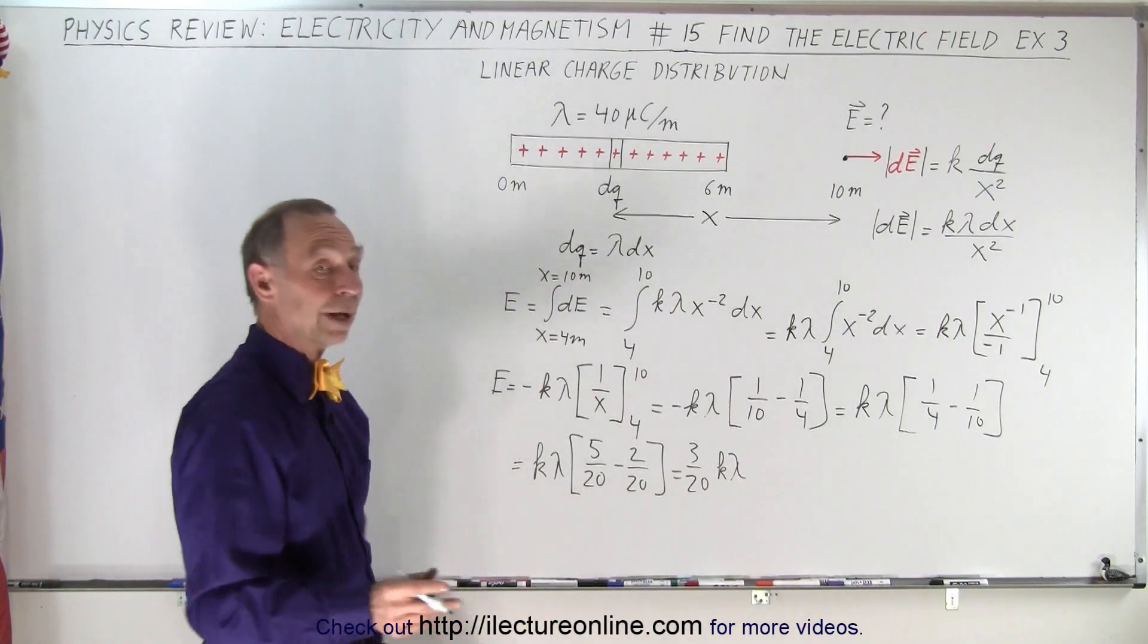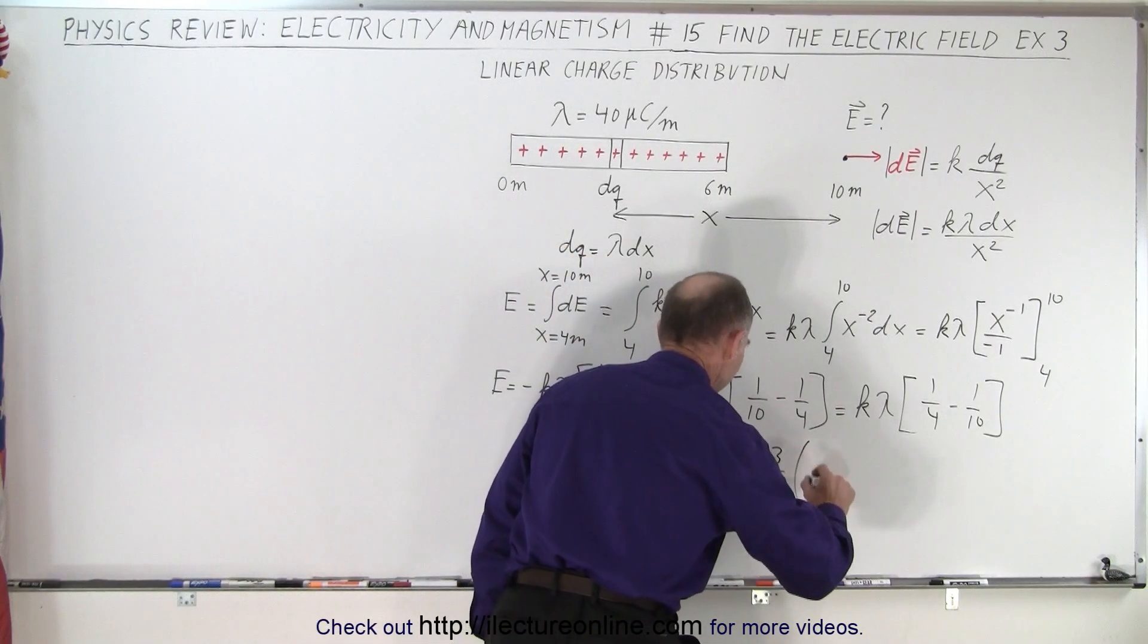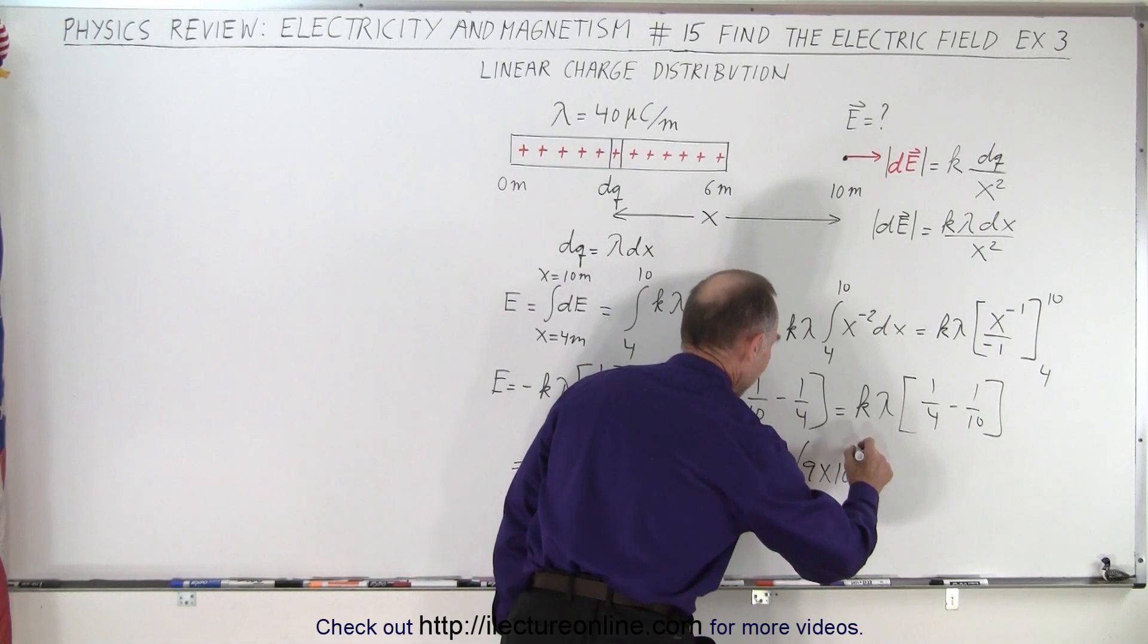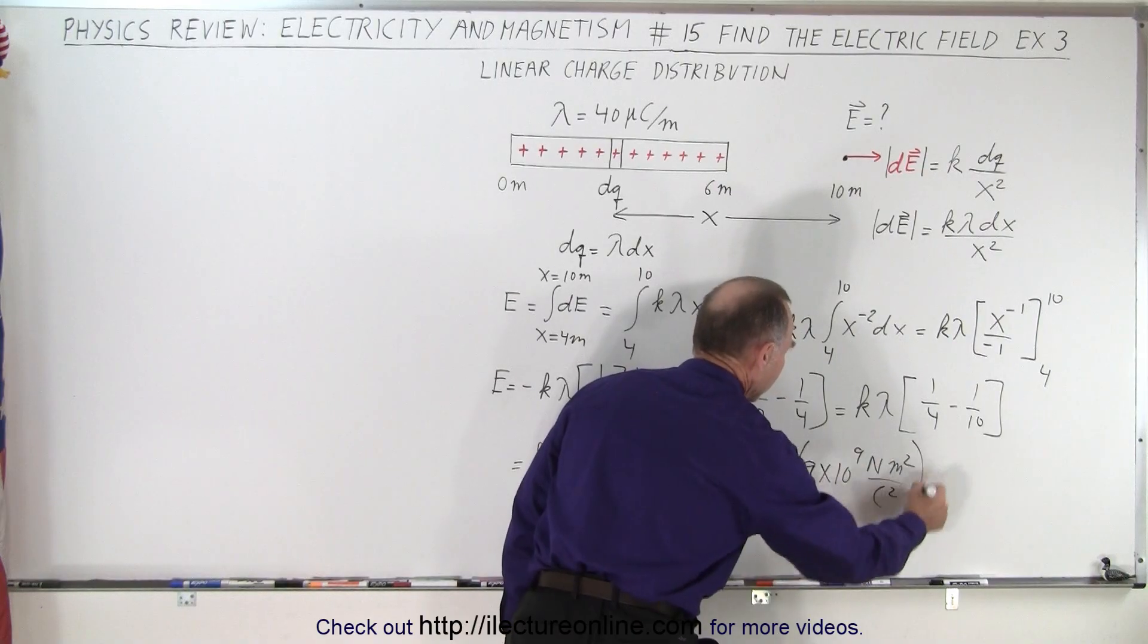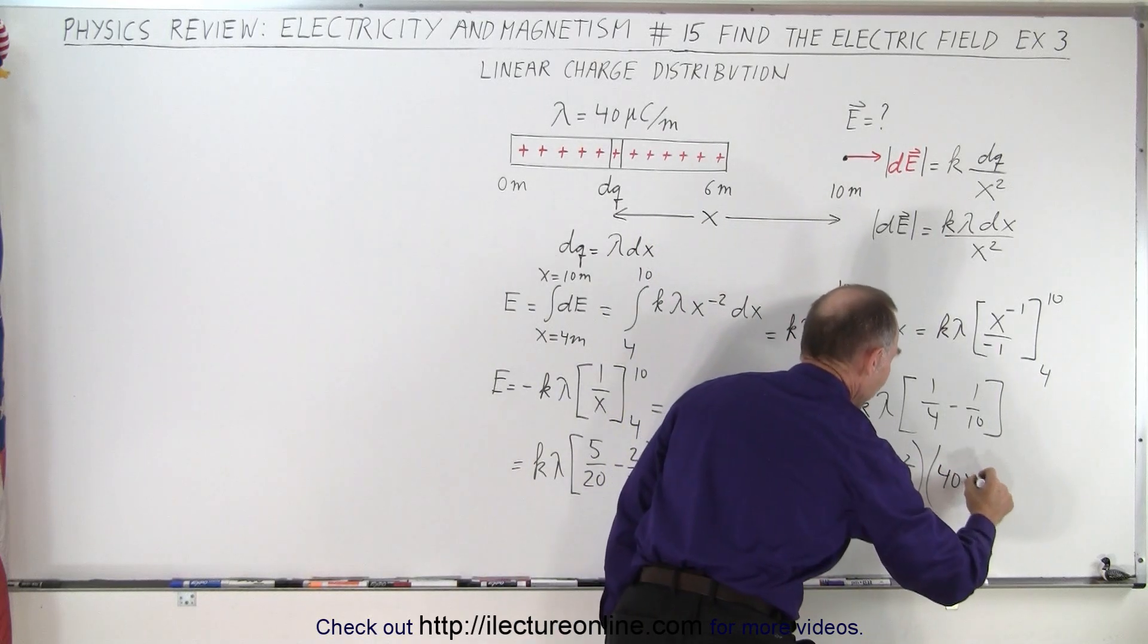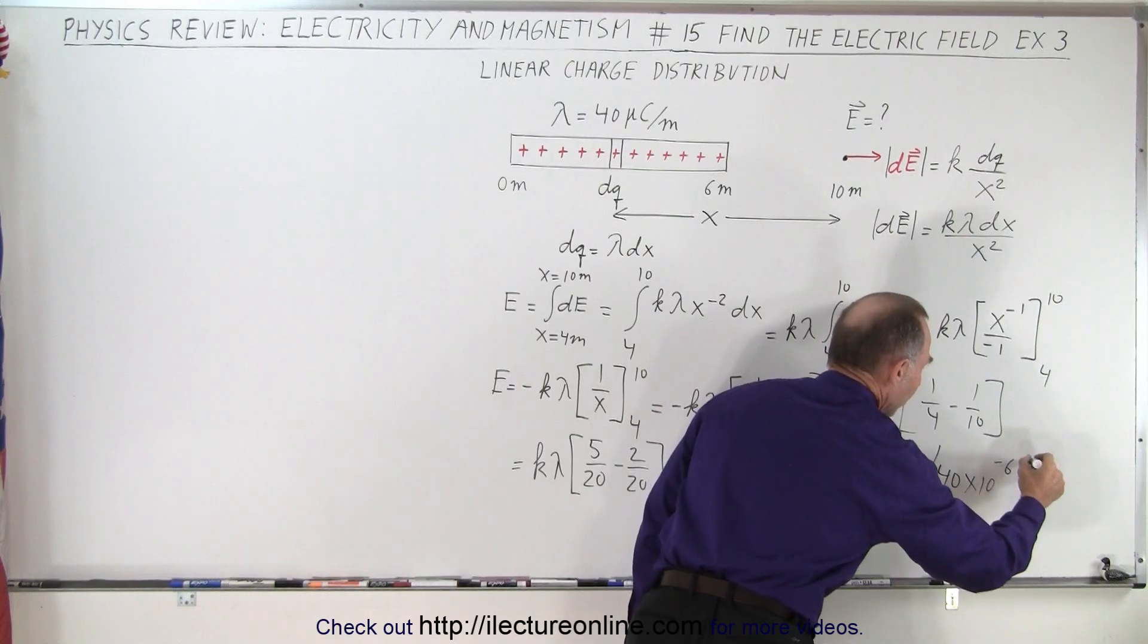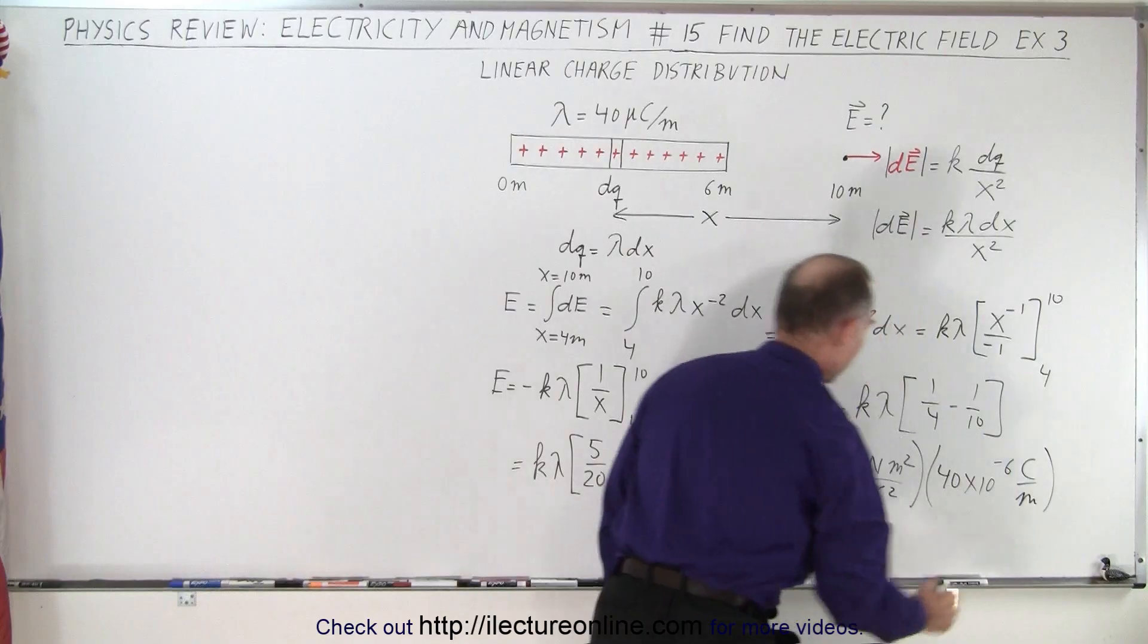Alright, now we're ready to plug in the numbers and see if the units work out. So this is equal to 3 over 20 times k, which is 9 times 10 to the ninth newton meter squared per coulomb squared. And lambda is equal to 40 microcoulombs, that would be 40 times 10 to the minus 6 coulombs per meter. There we go.